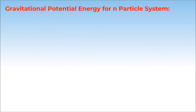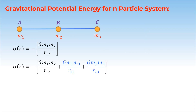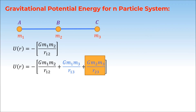Now we will find out the gravitational potential energy for an n-particle system. Suppose we have a two-particle system with masses m1 and m2. The potential energy U(r) equals minus G times m1 times m2 divided by r12, where r12 is the distance between mass m1 and mass m2. Now if we introduce one more mass m3, the potential energy of the system changes because m3 interacts with both m1 and m2. So the new potential energy U(r) equals minus G m1 m2 over r12, plus the potential energy due to interaction between m1 and m3, plus the potential energy due to interaction between m2 and m3.